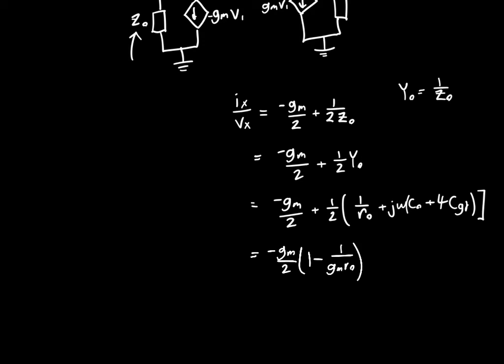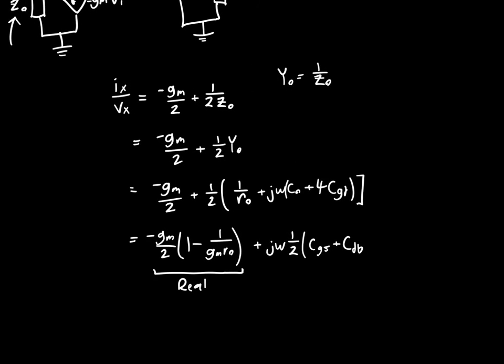So this is a purely real term, and it's dependent on GM and RO or GM and GMRO, the transistor gain, plus j omega times 1 half. And then recall CO was just CGS plus CDB, and then add 4CGD. And remember, the 1 half is coming from our analysis that the impedance is equal to 2 times V1, or sorry, 2 times V1 over the V1 IX as a function of V1. And so that's where the 1 half comes from in each of the terms.